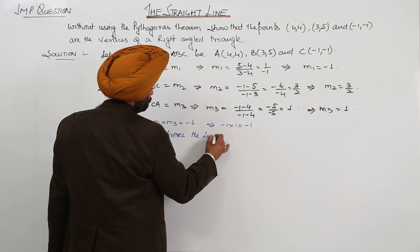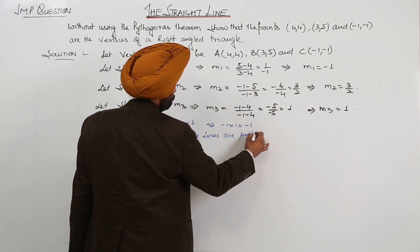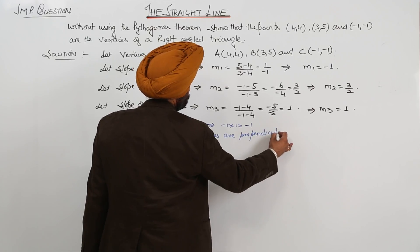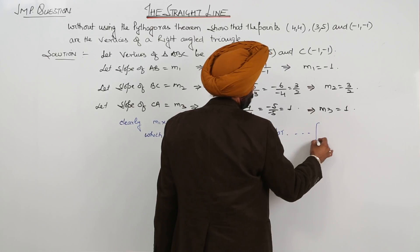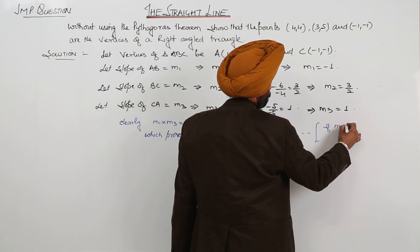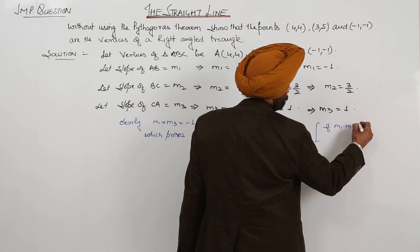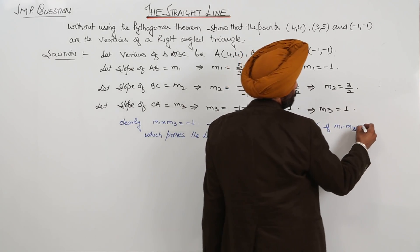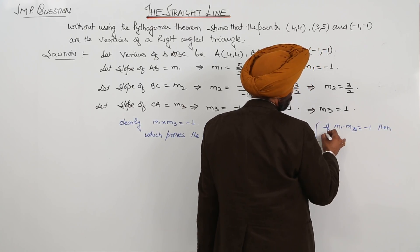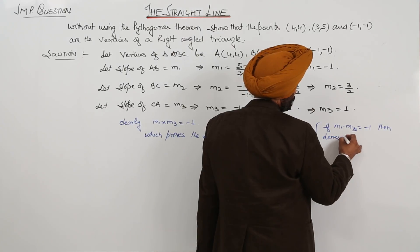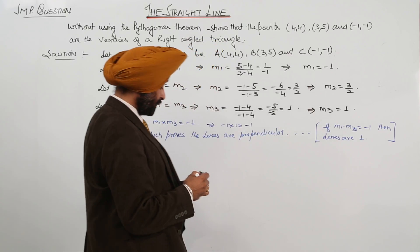the lines are perpendicular. If M1 times M3 equals negative 1, then lines are perpendicular. We have already done this.